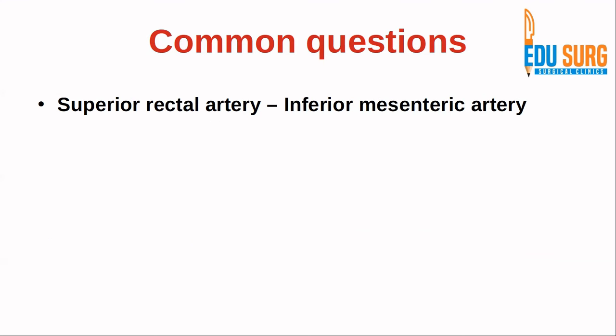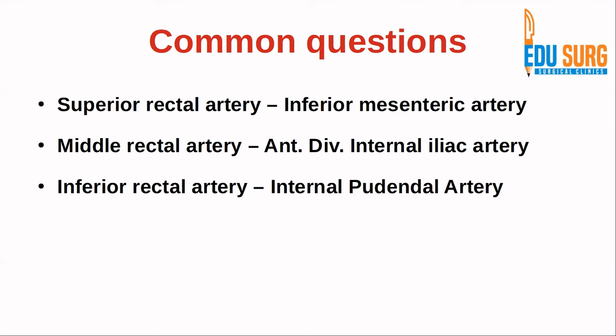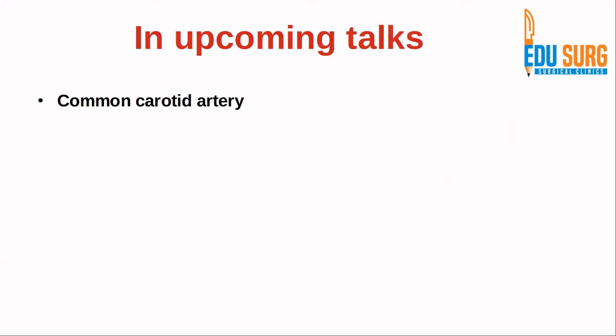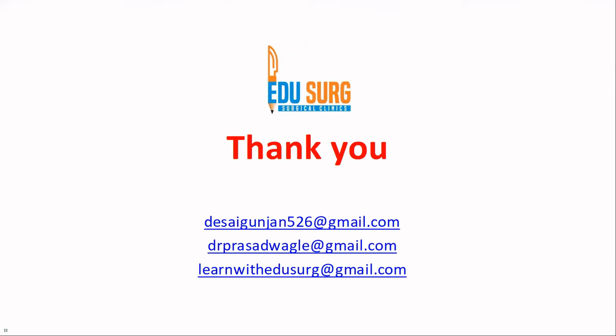Regarding the three rectal arteries: the superior rectal artery is a continuation of the inferior mesenteric artery; the middle rectal artery is a branch of the anterior division of the internal iliac artery; and the inferior rectal artery is a branch of the internal pudendal artery. This is how you can club together confusing vessels for better revision. In upcoming talks, we will look at the common carotid artery, the subclavian artery, and some thoracic arteries. Thank you.